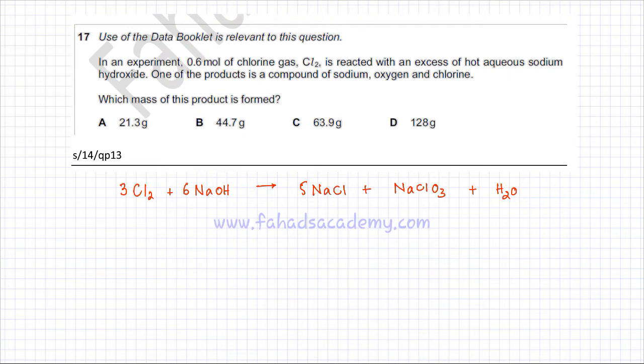This is the balanced equation of the reaction, chlorine reacting with NaOH and producing sodium chlorate. You must already be familiar with this reaction. This is a typical reaction of Group 7 compounds when they react with hot aqueous NaOH.